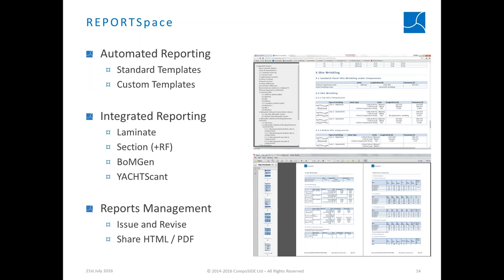Report Space is the module dedicated to automated reporting. It supports standard templates provided by Composite but also allows you to create your own customized templates. There are integrated reporting features for laminates, sections, bill of material generation, and scantling reports. Reports can be issued, reviewed, revised, and shared as HTML links or PDF files.